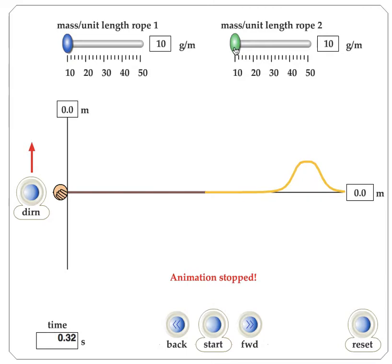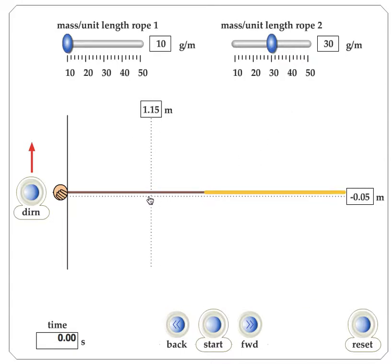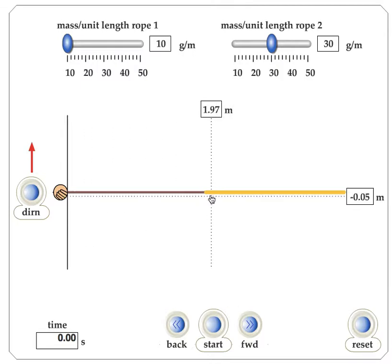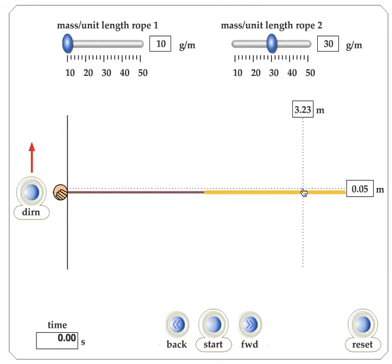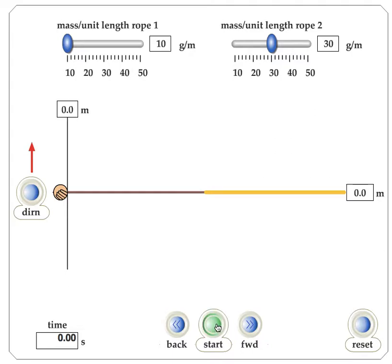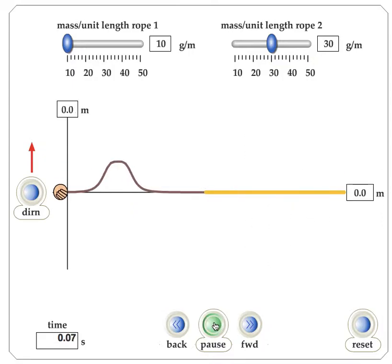So let's have the wave travel to a thicker medium. This would be like light going from air to water or glass or something. So if that happens, if I hit run, you can see the light definitely slows down. If I hit run again, it definitely slows down.